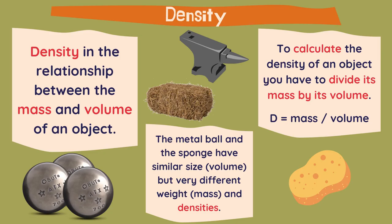For example, this metal ball and this sponge have a similar size, which means similar volume, but as you know, very different weight. That is the mass, and of course they will have different densities.